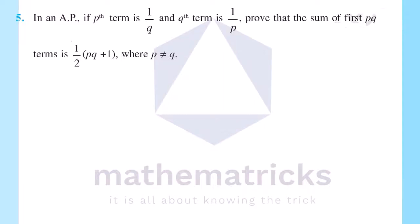Hi friends, welcome to Mathematics Only Learning. In this session, Exercise 9.2, Question 5: In an AP, if the pth term is 1/q and the qth term is 1/p, prove that the sum of first pq terms is ½ × (pq + 1), where p is not equal to q.